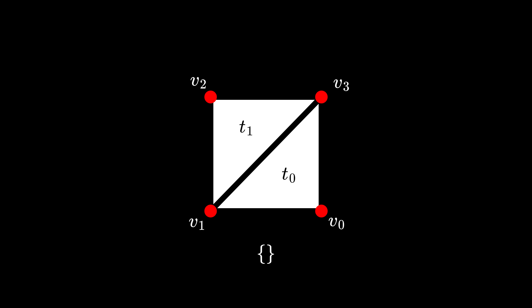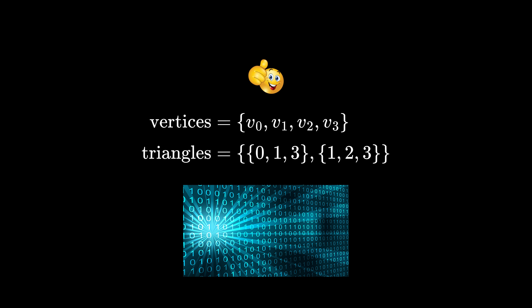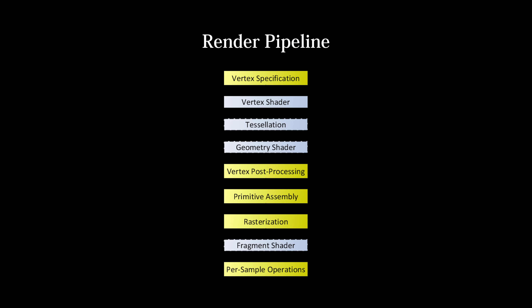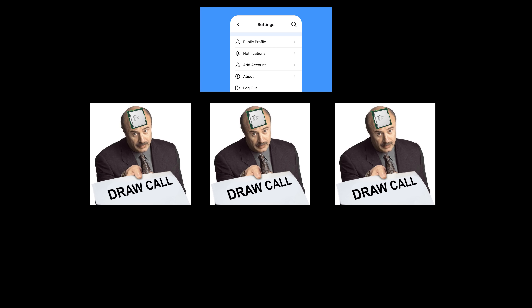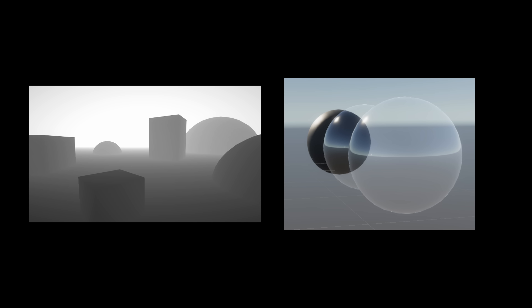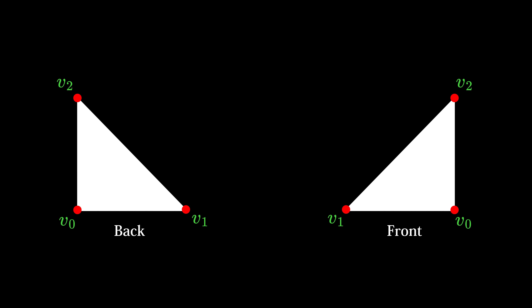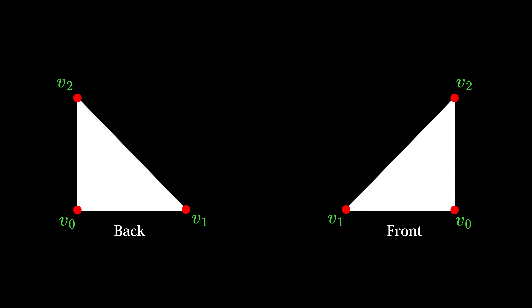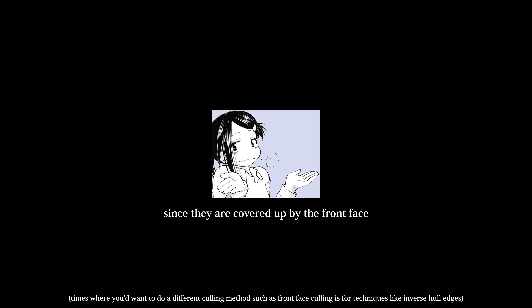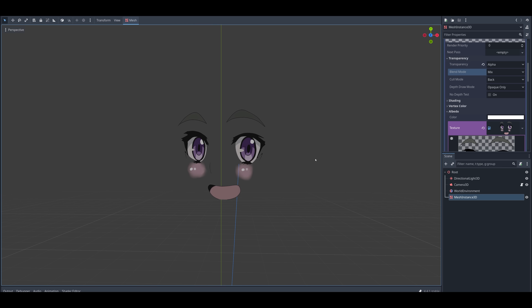With a clockwise winding order, we define the two triangles of our plane as vertices 0,1,3 and 1,2,3. Now that we have our mesh data, we need to create a render pipeline that tells the GPU how to draw the mesh. A render pipeline is like a list of settings for the GPU applied to every subsequent GPU command, such as how to handle depth and blending. One such setting is the cull mode, which tells the GPU what face of a triangle to ignore. We want to enable back-face culling so our GPU doesn't render the back side of triangles, which we would never see anyways. This is why the winding order of our triangle list matters — if your triangles ever seem invisible, you might be viewing them from the wrong side.